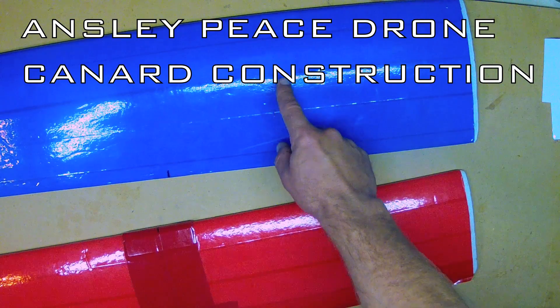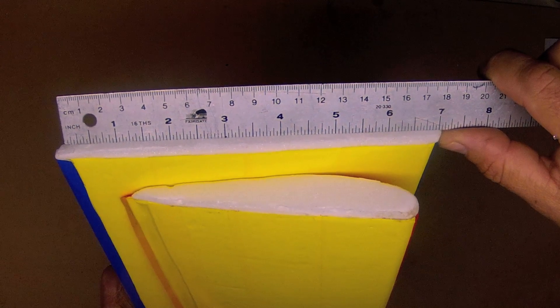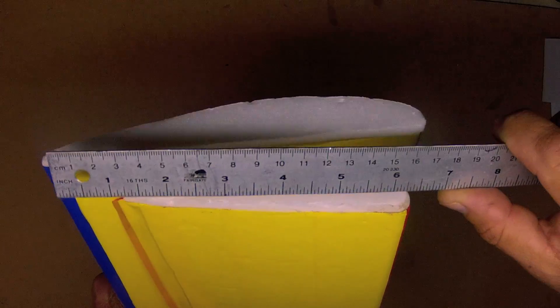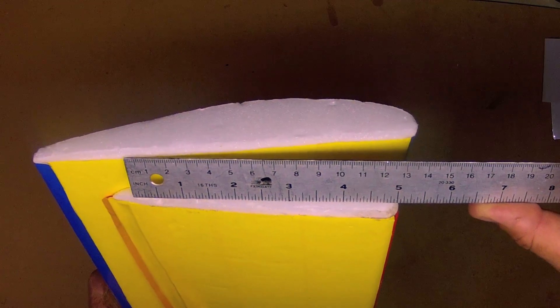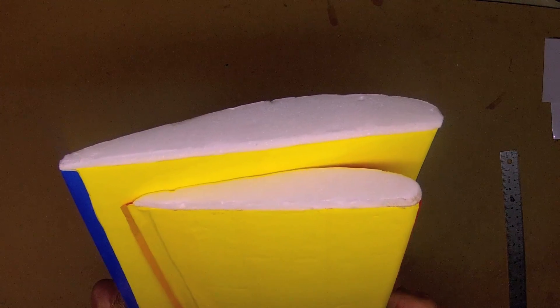In this video I'll demonstrate the construction of the canard wing for the Ainsley Peace drone. This can be constructed either in the 7 inch nominal, which ends up being finished at about 7.5 inches, or the 5 inch nominal, which ends up being about 5.5 inches finished cord, depending on the finishing technique for the trailing edge.